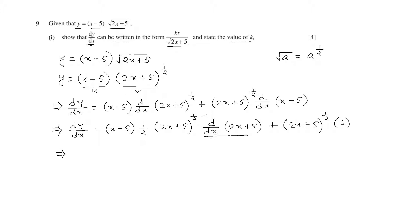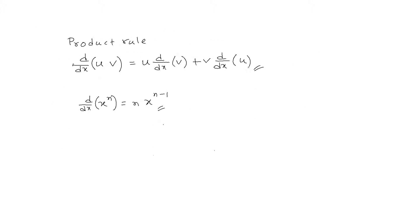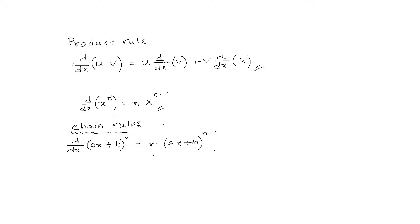Why did we multiply by d over dx of 2x plus 5? We did it because of the chain rule. The chain rule states: if we have a term like ax plus b whole to the power n, then differentiating with respect to x gives n times ax plus b whole to the power n minus 1, times d over dx of ax plus b. We applied that chain rule in our original math.